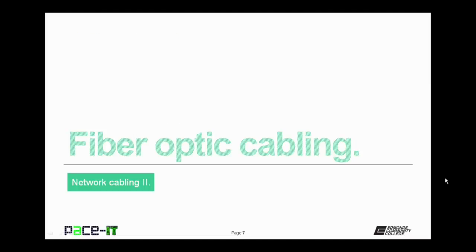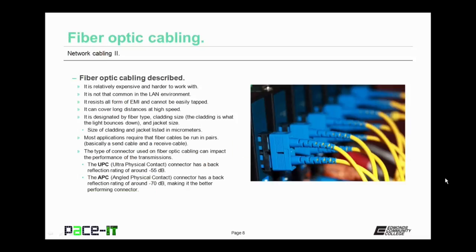Now let's move on to fiber optic cabling. Fiber optic cabling is relatively expensive and harder to work with than other types of network cabling. It's not as common as coax or twisted pair in the LAN environment. But it can resist all forms of electromagnetic interference and cannot be easily tapped into, meaning it's harder for people to eavesdrop on your network transmissions. It also can cover long distances at high speed.